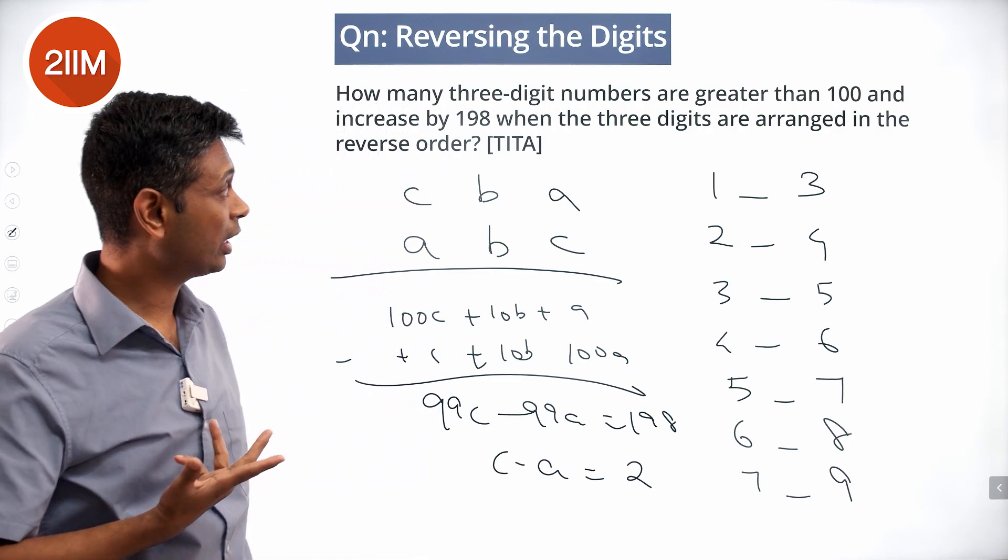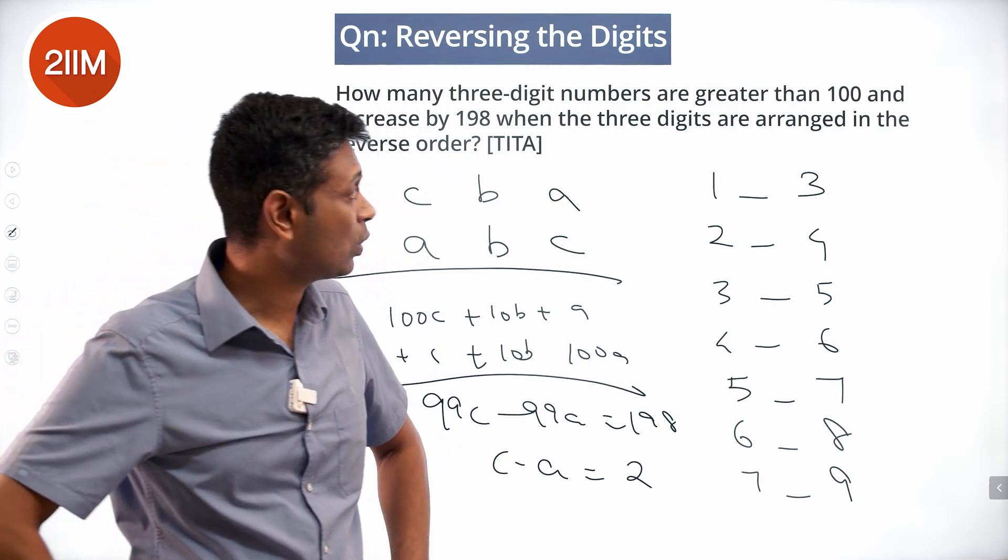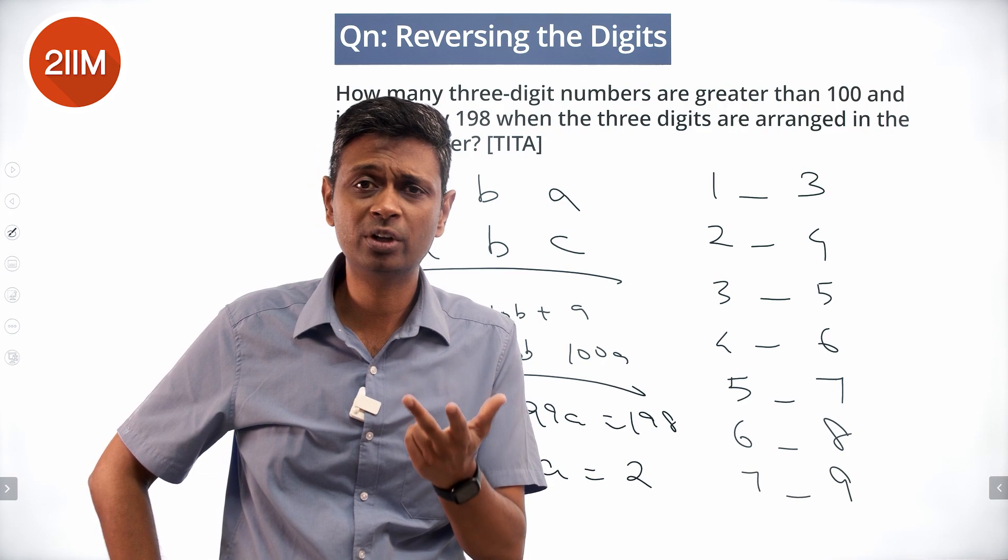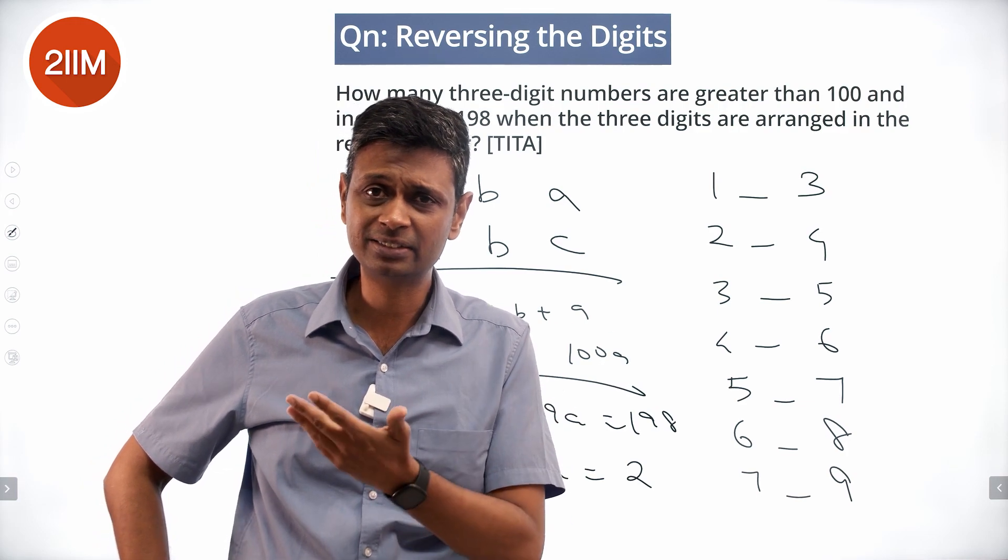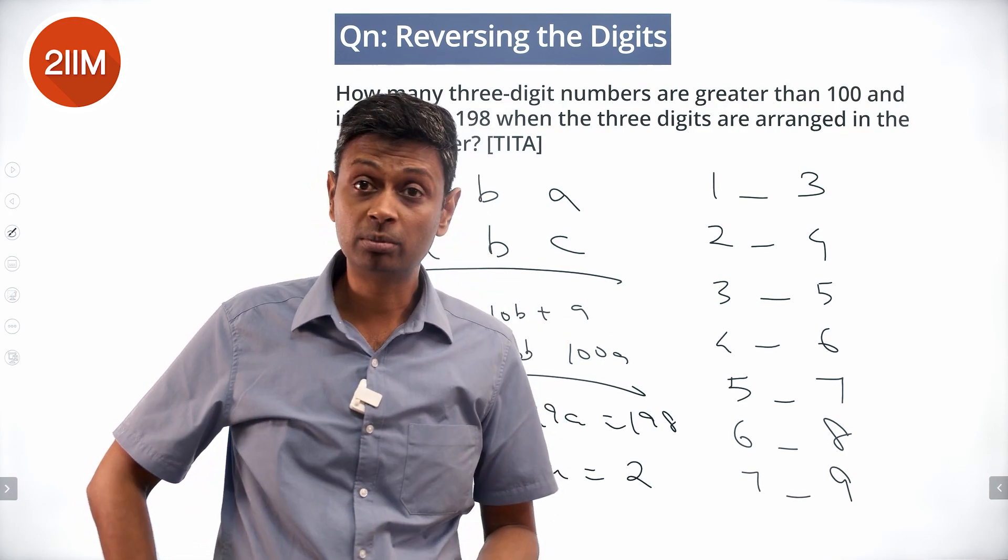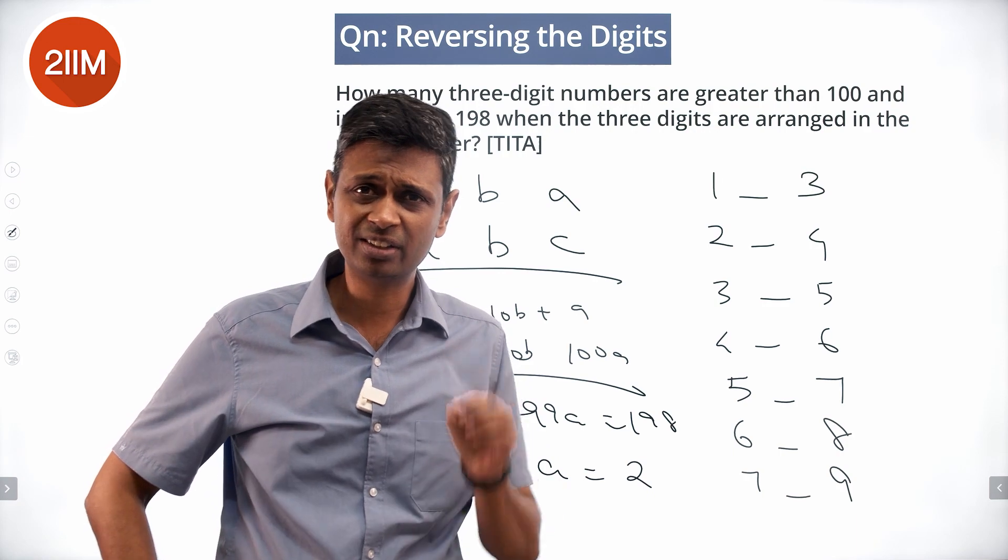Any one of these will work. From 1-3, we could have 103, 113, 123, 133, etc. - 10 possible numbers. The middle digit B has no constraint and can take all values from 0 to 9, so 10 numbers for each pattern.